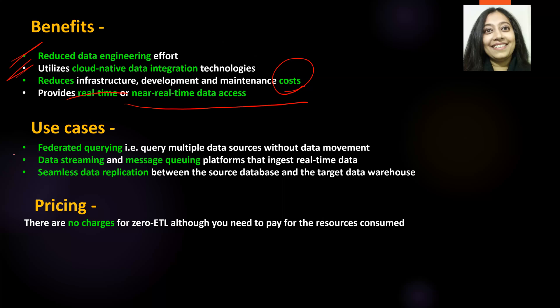Use cases: Federated querying is a feature of Amazon Redshift that allows you to query multiple data sources — especially data silos — without any data movement. Zero ETL can help migrate and replicate data and then enable Redshift to perform federated querying. Data streaming and message queuing platforms that ingest real-time data are also a valid use case. And any use case requiring seamless data replication between a source database and a target data warehouse is a perfect candidate for Zero ETL integrations.